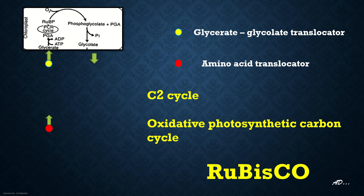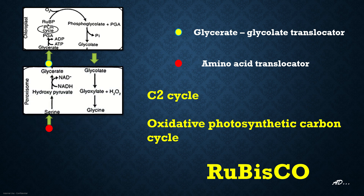This glycolate formed in the chloroplast travels to the peroxisome, where it is converted to glyoxylate by the enzyme glycolate oxidase. In this reaction, we see the formation of H2O2, or hydrogen peroxide. This hydrogen peroxide is well known to cause harm to living organisms. The enzyme catalase, found in the peroxisome, will neutralize H2O2 to water, thus rendering it harmless.